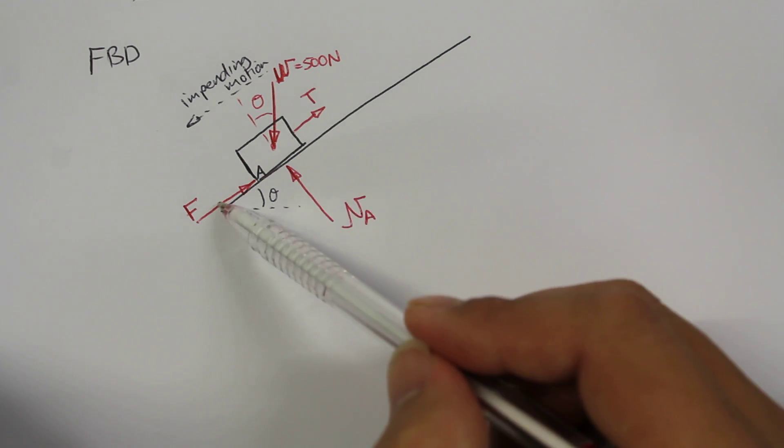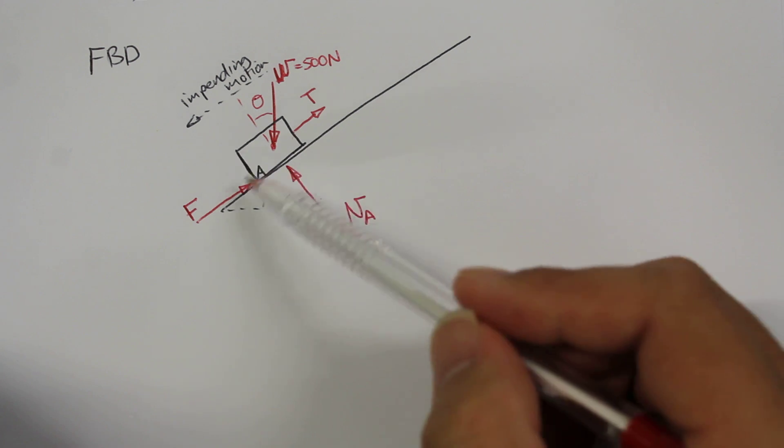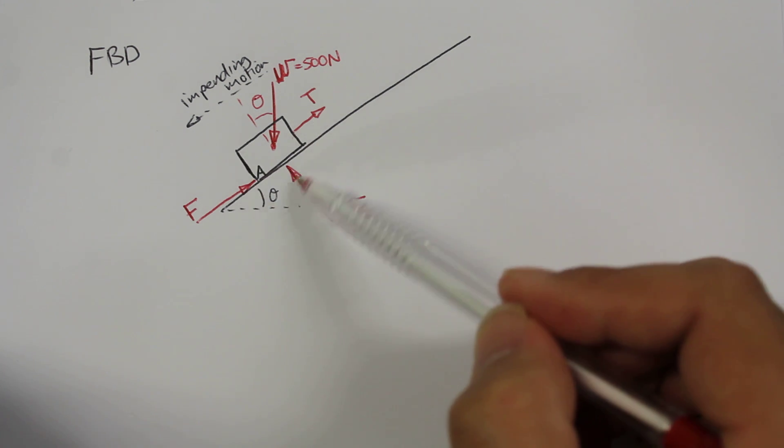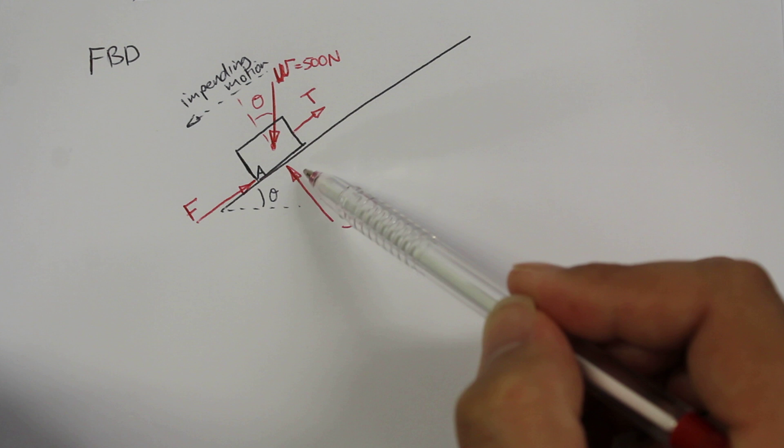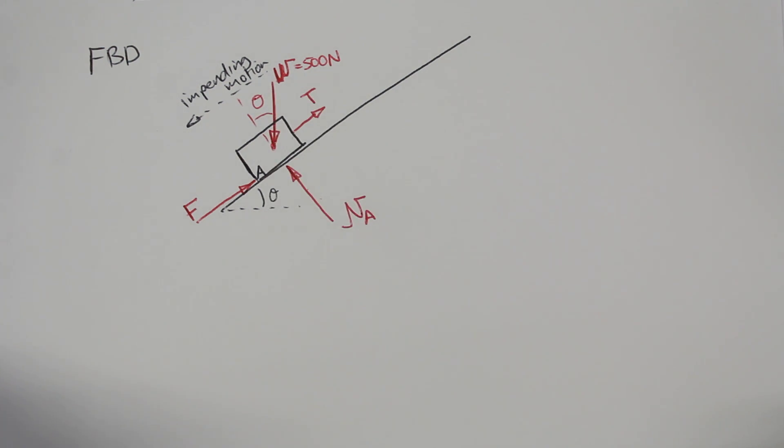That's the free body diagram for block number A. We currently have one, two, three unknowns. Actually it's going to be four unknowns. So the friction force, the normal force, the tension force, and also this angle theta here as well.